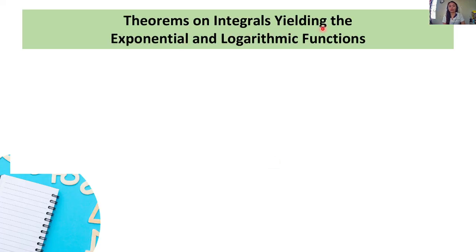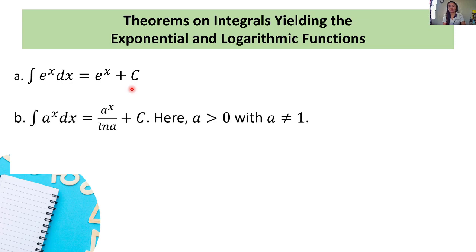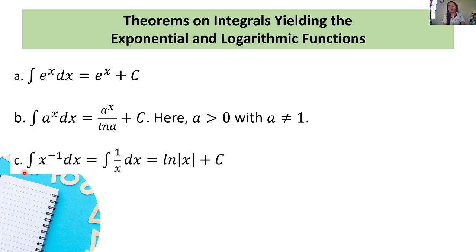Theorems on integrals yielding the exponential and logarithmic functions. First, the integral of e raised to x dx is equal to e raised to x plus c. Next, the integral of a raised to x dx is equal to a raised to x over the natural logarithm of a plus c, where a is greater than 0 with a not equal to 1. Third, the integral of x raised to negative 1 dx is equal to the integral of 1 over x dx, which is also equal to the natural logarithm of the absolute value of x plus c.